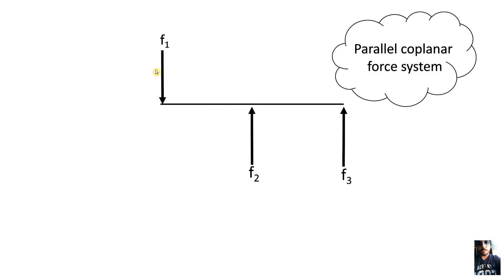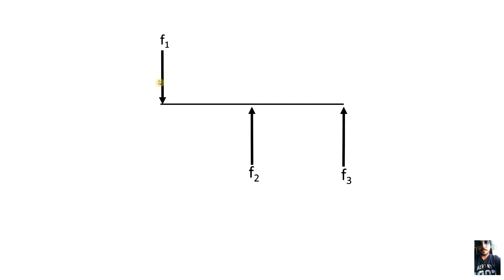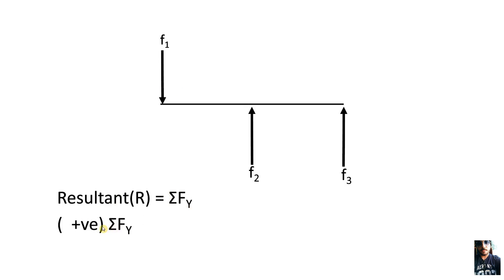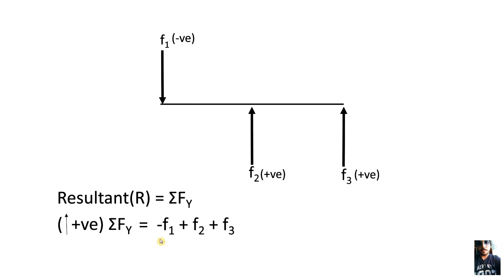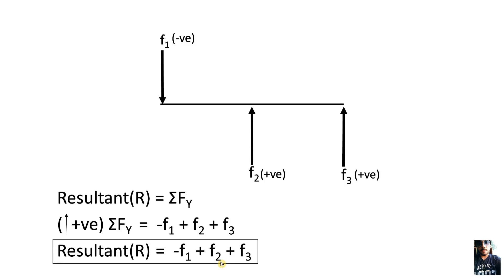They are parallel because these forces are parallel, and coplanar because these forces lie in a plane. And because these forces are vertical, the resultant will also be a vertical force. To find its value, we will simply add these forces — so the resultant will be the summation of all the vertical forces.